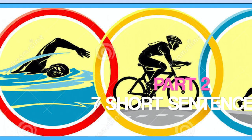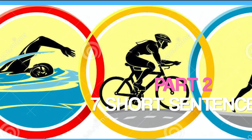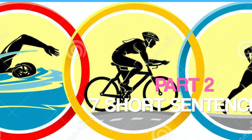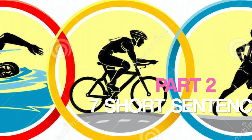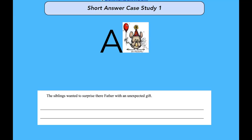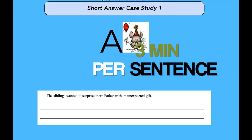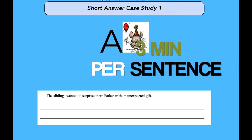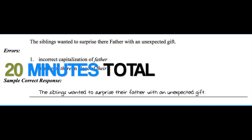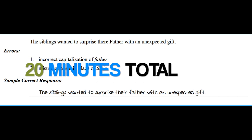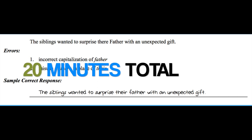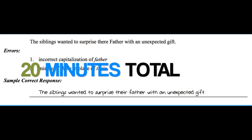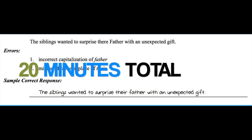The next leg of our triathlon is going to involve editing short sentences. A good pacing for this is 3 minutes per sentence, so that's going to work out to roughly around 20 minutes for the second part of your exam.